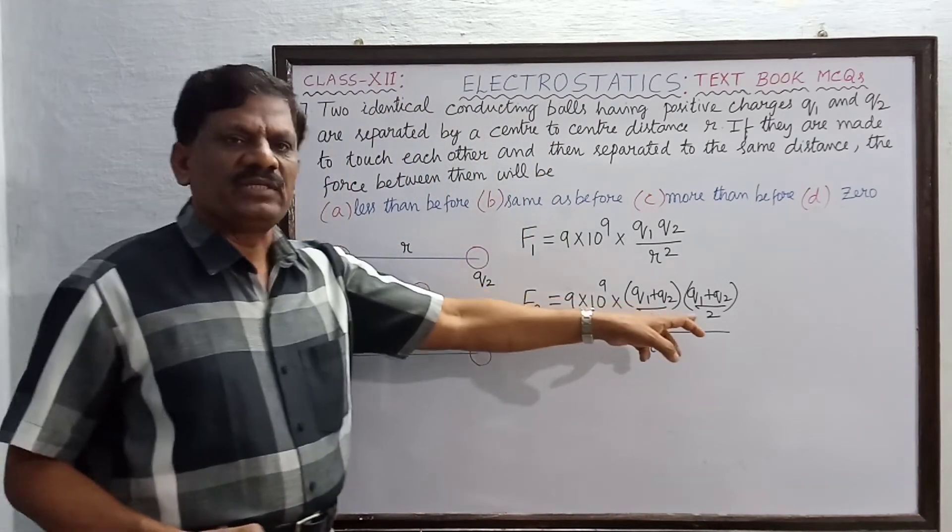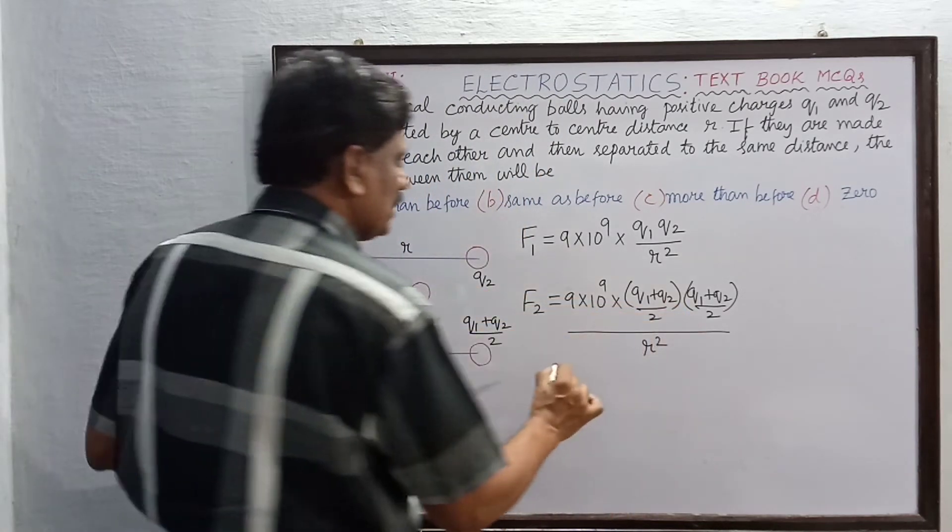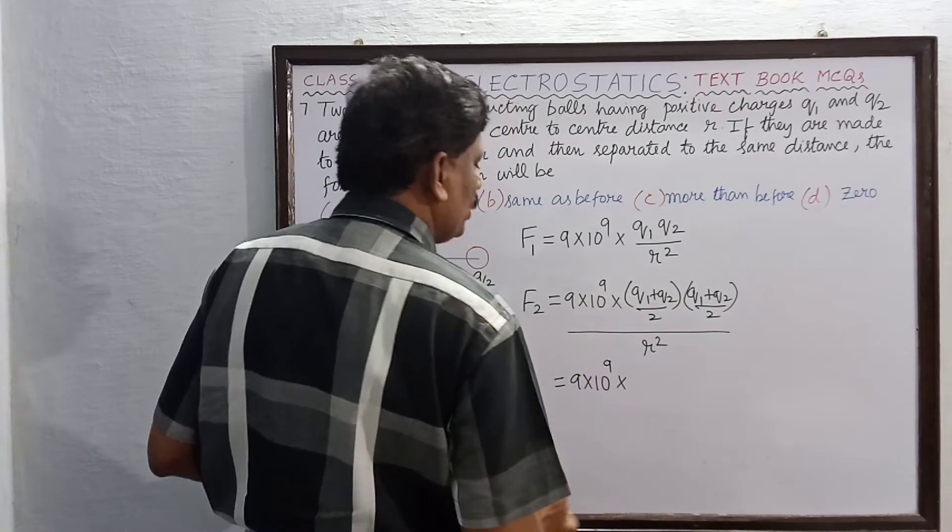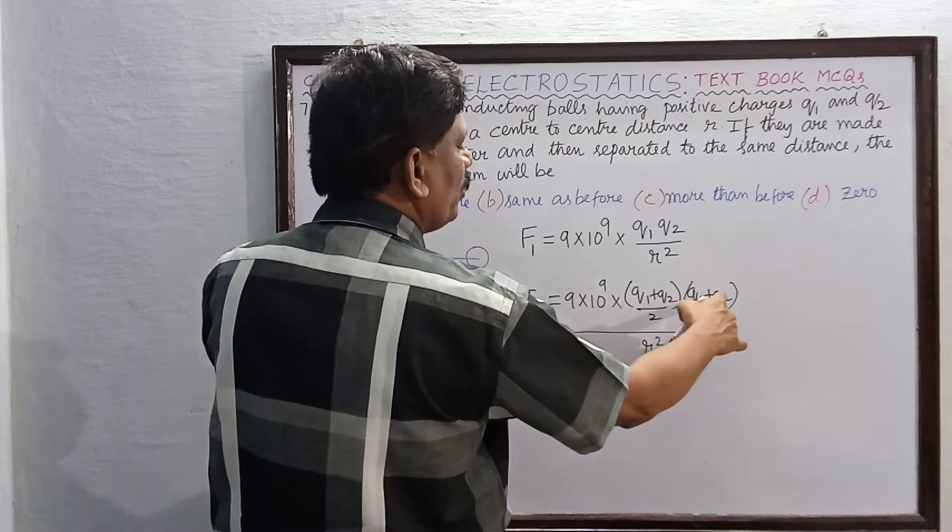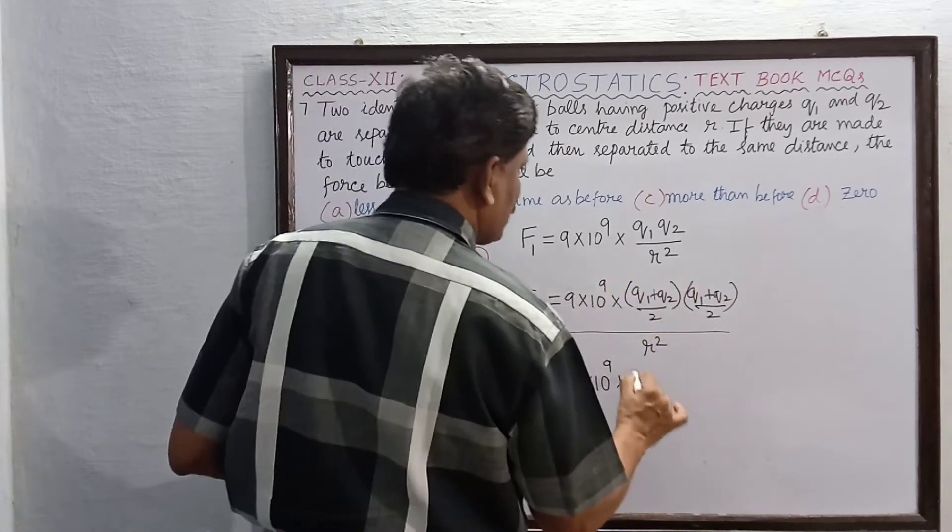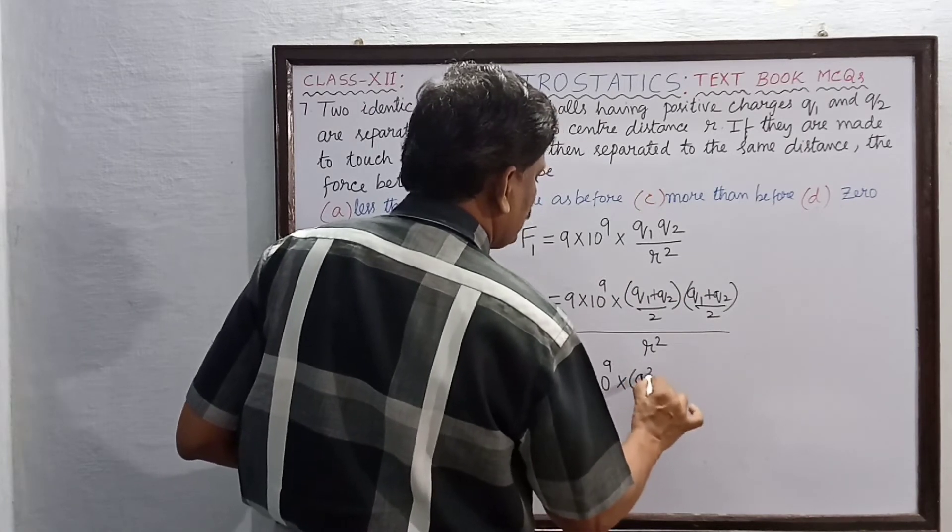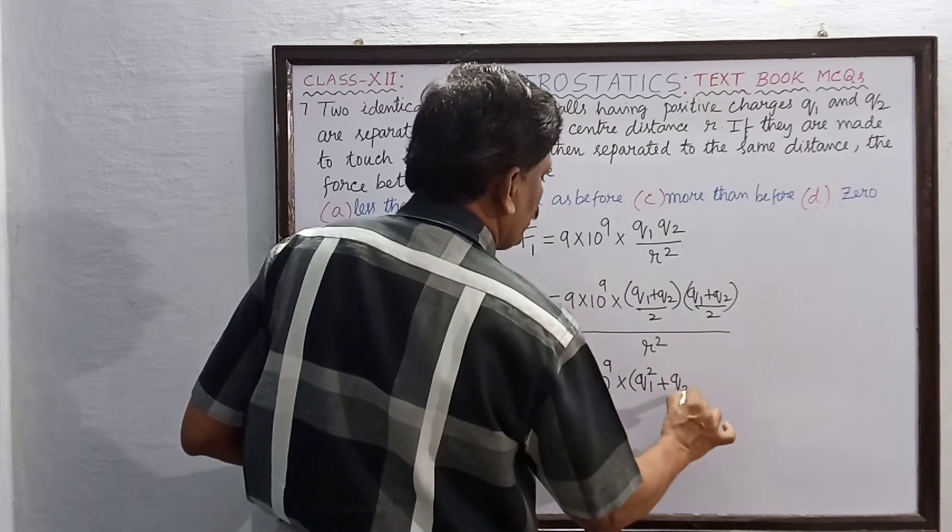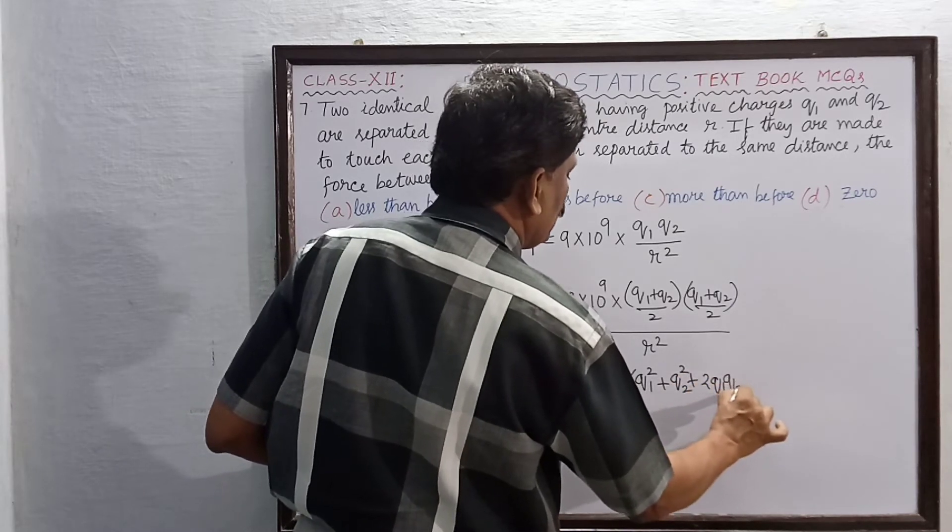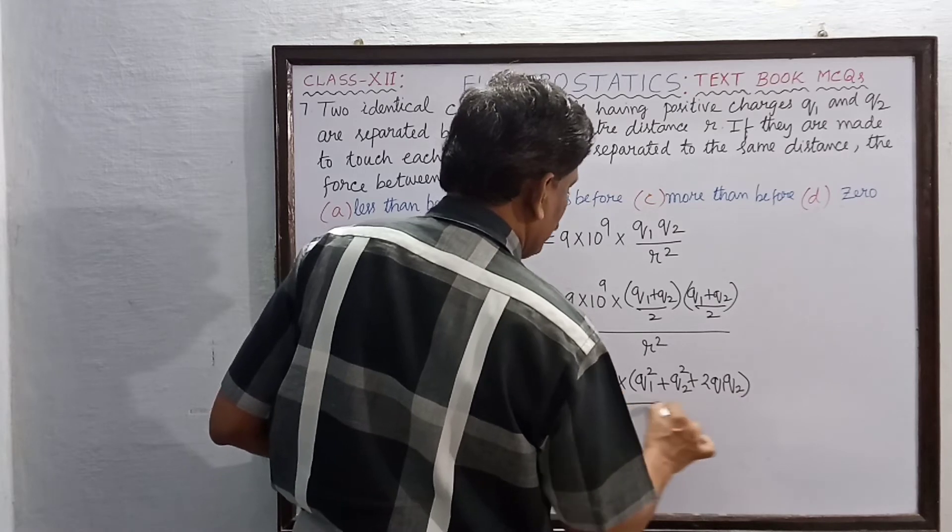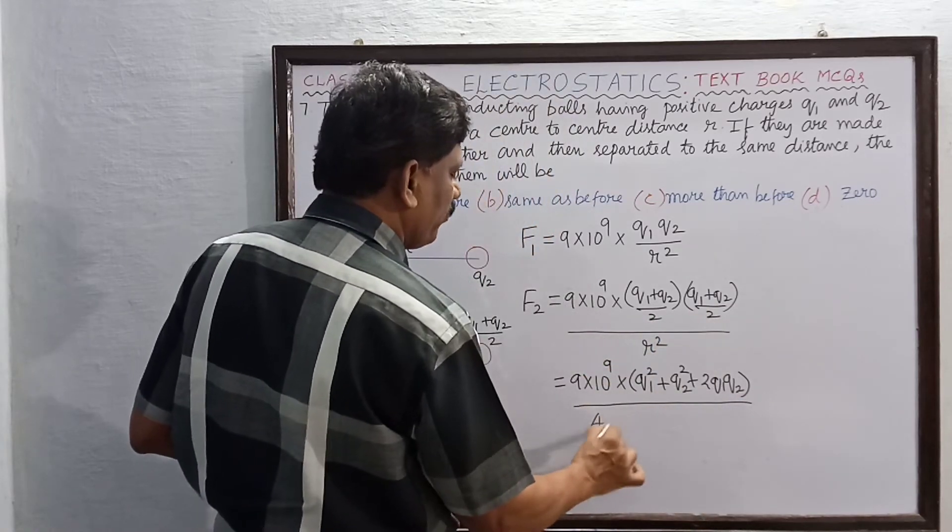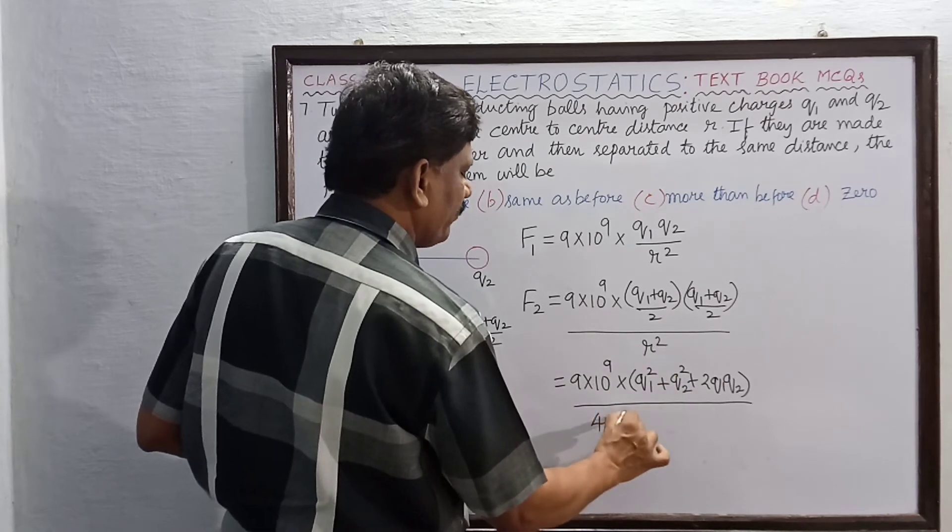This is the new expression for the Coulomb force. This is now equal to 9 into 10 to the power of 9 into (q1+q2) whole square numerator - (q1+q2) whole square upon q1 square plus q2 square plus 2q1 into q2, whole divided by 2 into 2, which is 4, r square divided by 4r square.